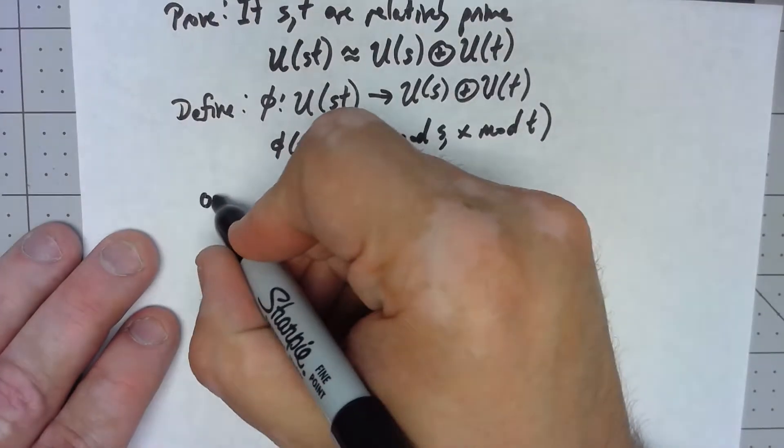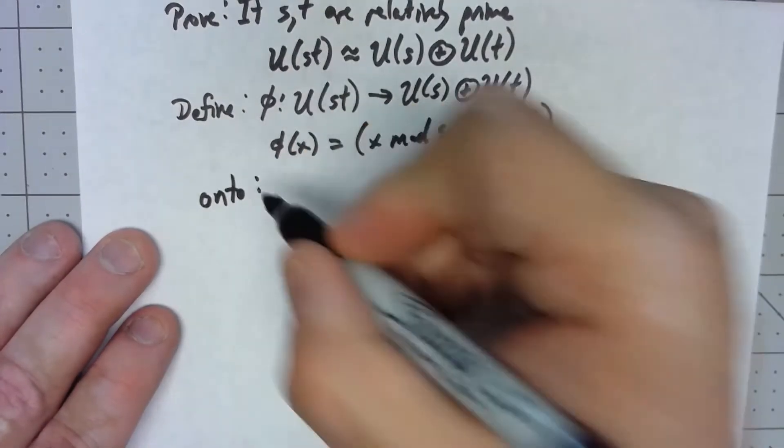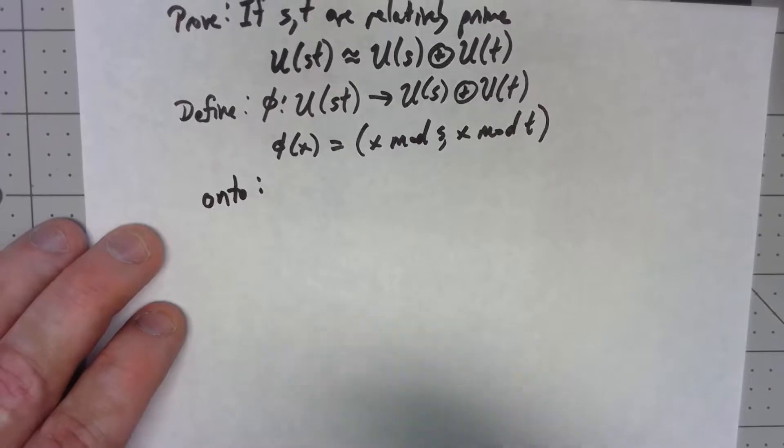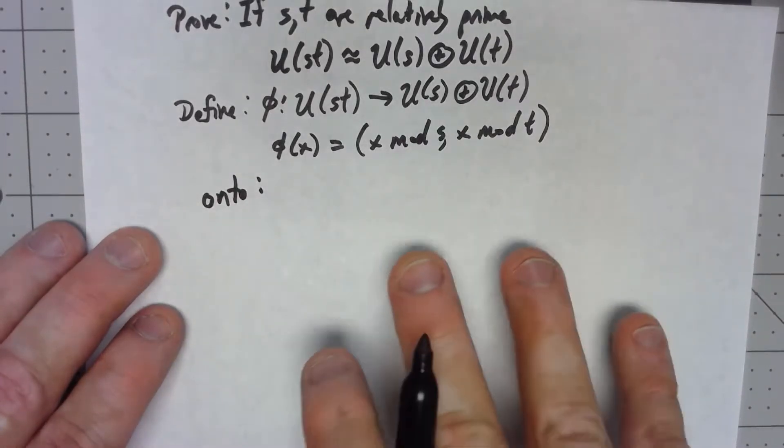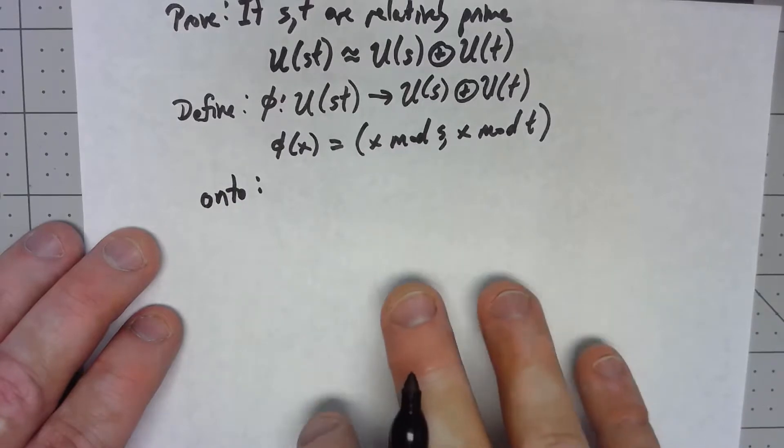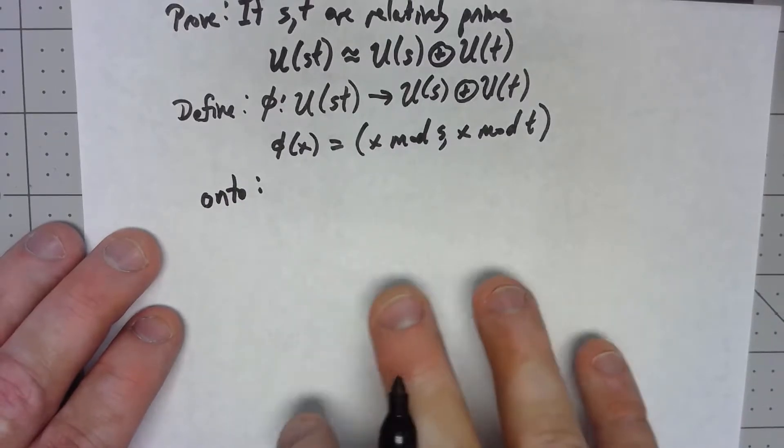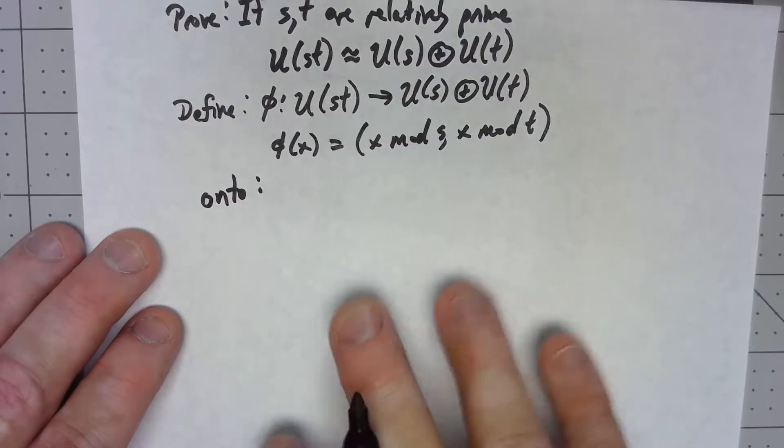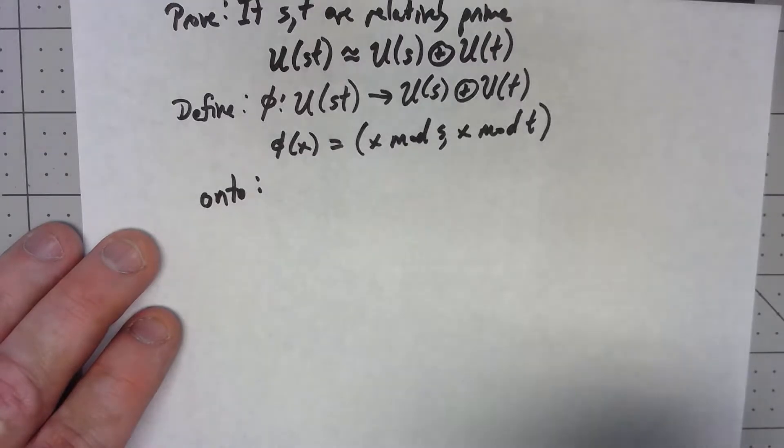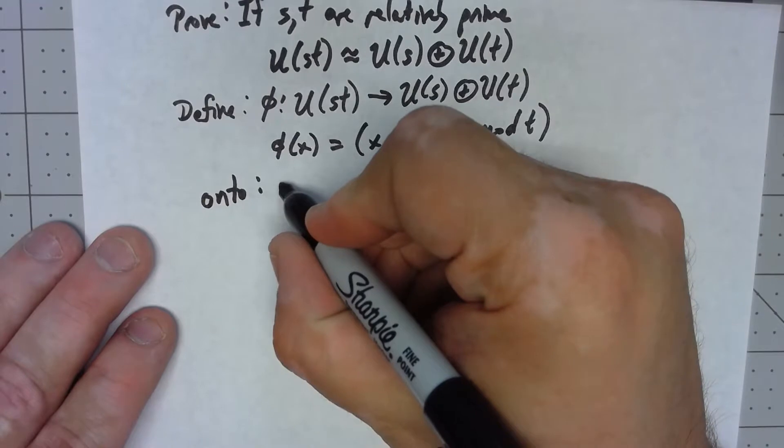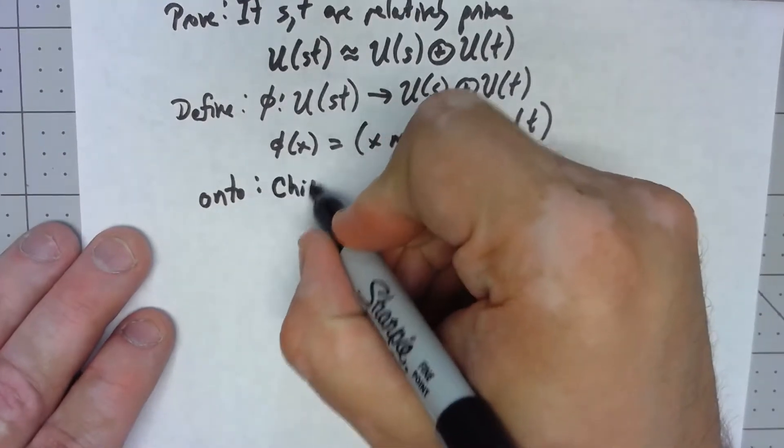I'm going to start with showing that it's onto because this is actually the hardest part of the proof. It involves some number theory that I wouldn't really expect someone in this course to necessarily know. Even if you've had a number theory class, remembering to use this thing, remembering the theorem, and realizing to use it is kind of a stretch. It's called the Chinese remainder theorem.